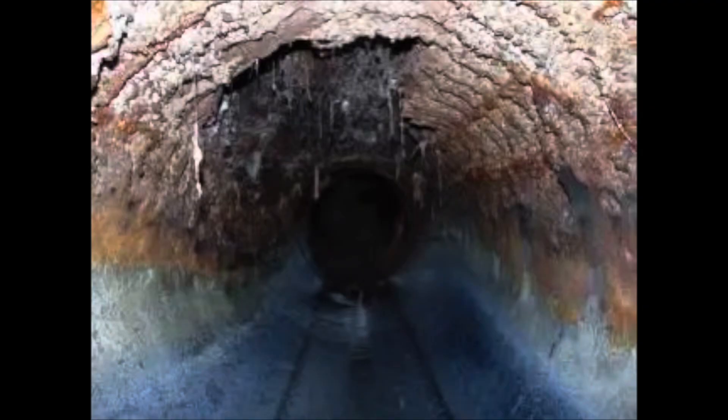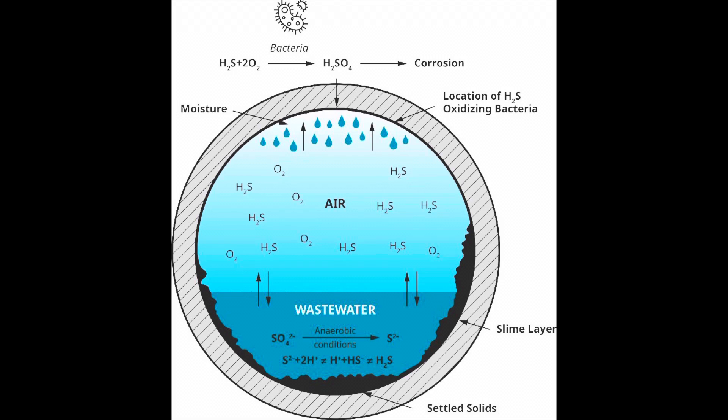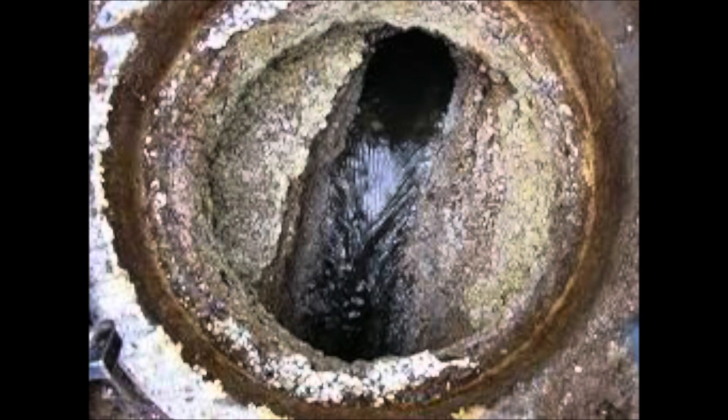H2S is not only a malodorous problem but it also is the precursor to the next step, which is corrosion. Hydrogen sulfide runs into bacteria that consumes the sulfide and secretes sulfuric acid, which is H2SO4. Sulfuric acid is highly corrosive and it can chew through concrete and metal very quickly.